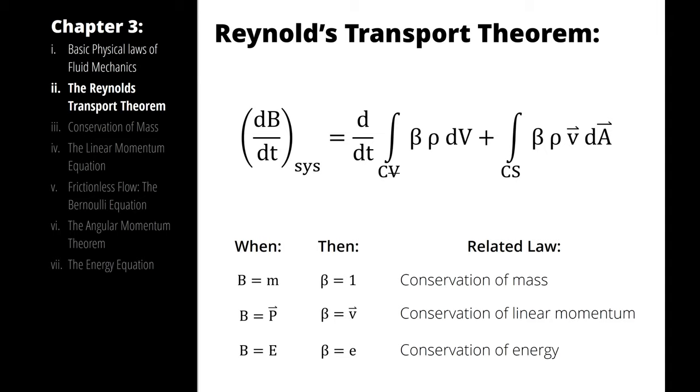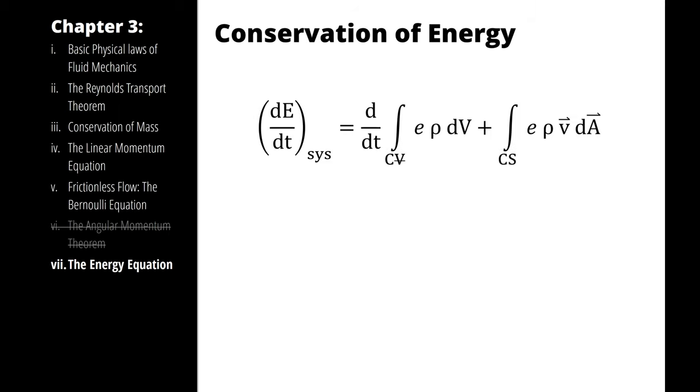When we simplify the Reynolds transport theorem for energy, we are going to be plugging in a beta value of the specific energy of the system, and a b value of the total energy of our system. That looks like this. And this is too much to talk about all at the same time, so let's start with the term on the left.